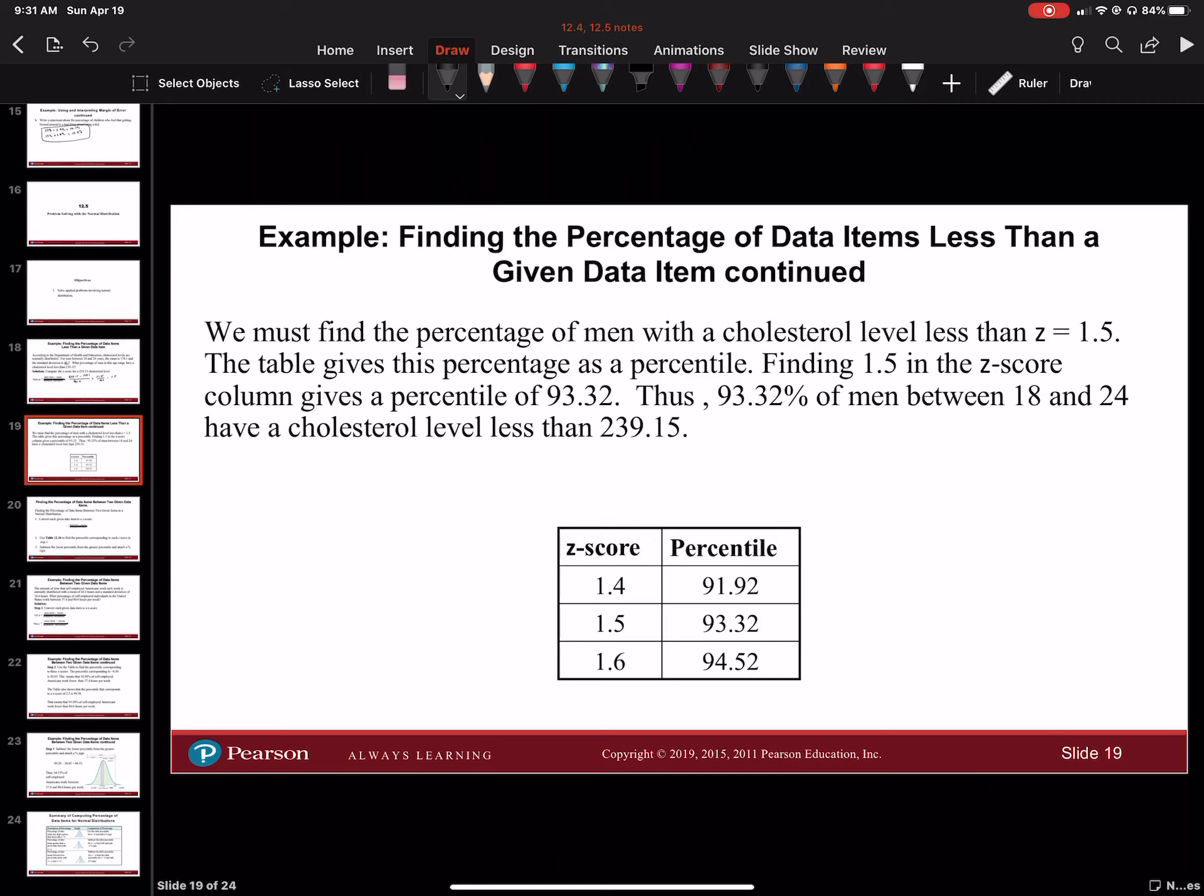We must find the percentage of men with cholesterol levels less than z equal to 1.5. The table gives us this percentage as a percentile. Finding 1.5 as the z-score in the column gives you a percentile of 93.32. Thus, 93.32% of men between 18 and 24 have cholesterol levels less than 239.15. If you go to that big table in your book, you find 1.5 and you'll see the percentile beside it.